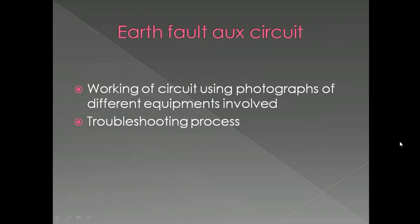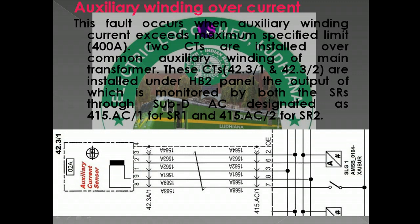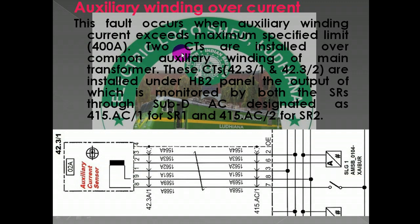In this video we are covering the topic of auxiliary winding overcurrent. Auxiliary winding overcurrent is the same as burr current over maximum. This fault occurs when auxiliary winding current exceeds the maximum specified limit. The maximum specified limit is 400 ampere. There are two CTs installed in the locomotive.